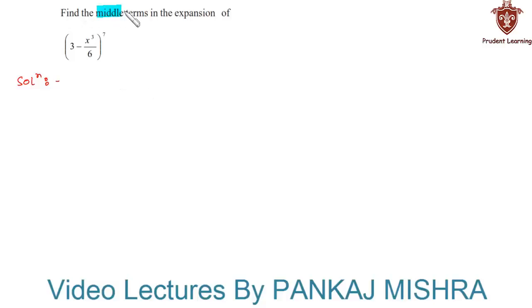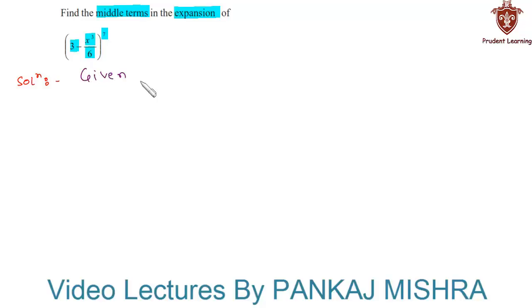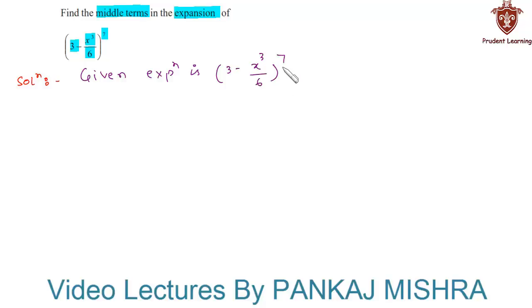Find the middle terms in the expansion of (3 minus x cube upon 6) whole raise to 7. Let us see the solution. The given expression is (3 minus x cube upon 6) whole raise to 7.